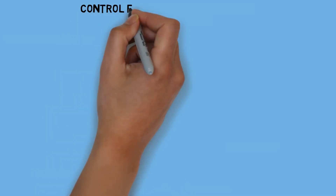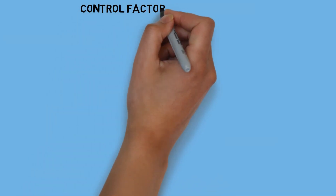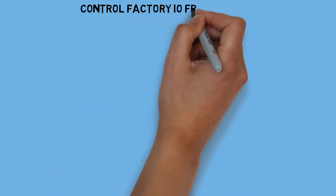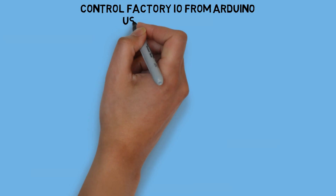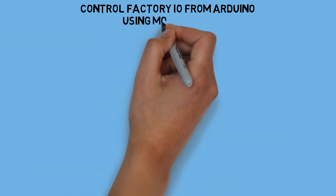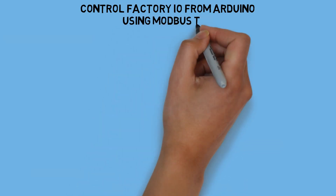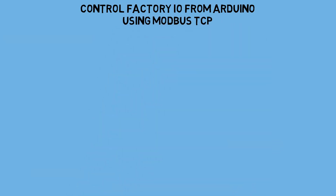Hi, welcome back to my channel. In this video, I will show you how to control sensor and actuator in Factory IO from Arduino using Modbus TCP connection.